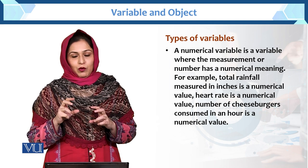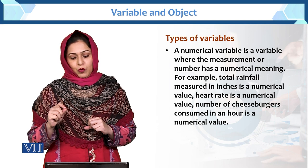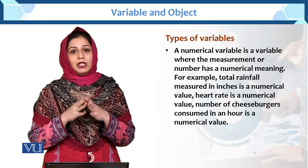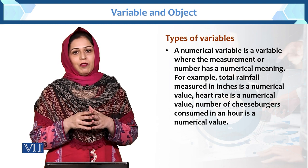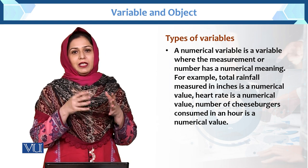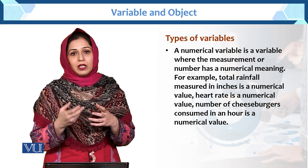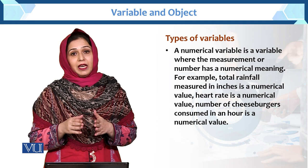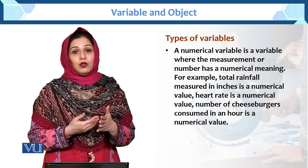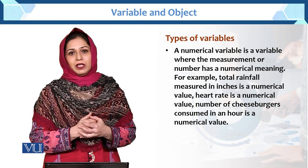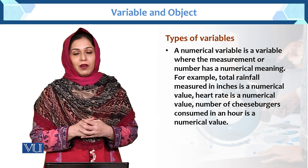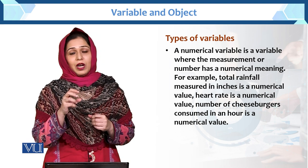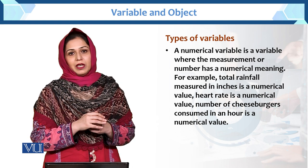Now next is the numeric variable. A numerical variable is a variable where the measurement or number has a numerical meaning. Jaise maine aapko height ki example di — height mein kya aati hai, numeric value: 5 feet, 10 feet, 7 feet — yani aap isko numeric value ke saath assume kar rahe ho, this is called the numerical variable. For example, total rainfall in inches — total rainfall ko measure kar rahe hain in inches: 2 inches, 3 inches, 4 inches. Next, heart rate is a numeric value — young adult ki normal heart rate 60 to 100 hoti hai — humne usko numeric value di hai, this is called the numerical variable.